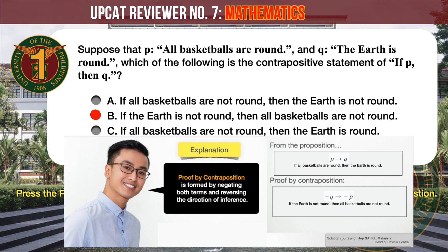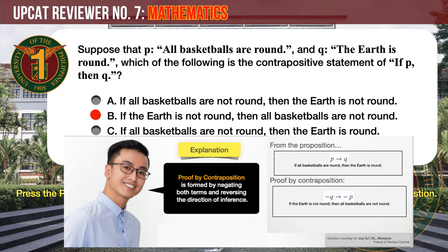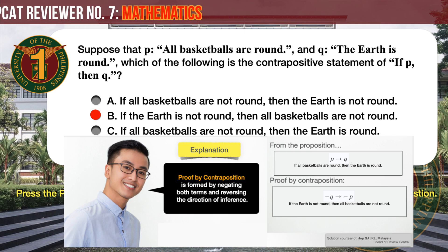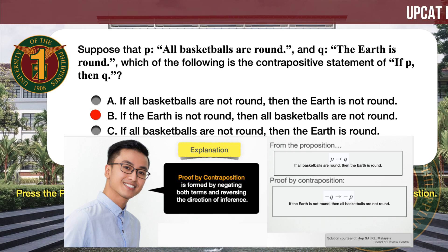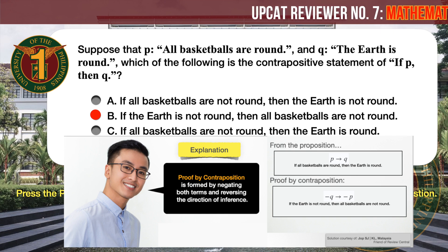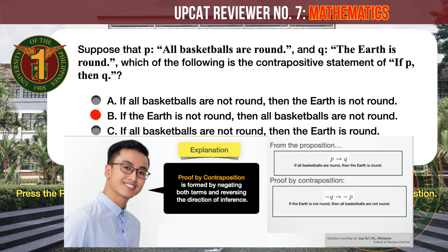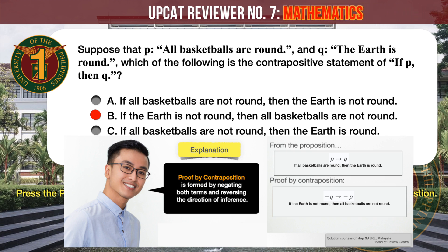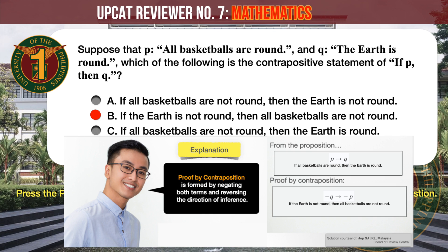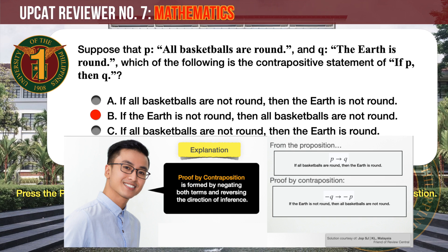Then we reverse the direction of inference. In the original statement, 'all basketballs are round' (P) came first, and 'the earth is round' (Q) follows. In the contrapositive statement it goes the other way around. Therefore, the contrapositive statement is: if the earth is not round (not Q), then all basketballs are not round (not P).